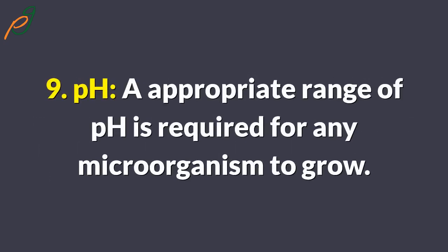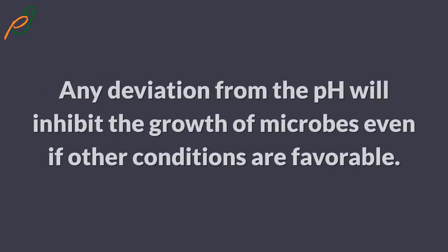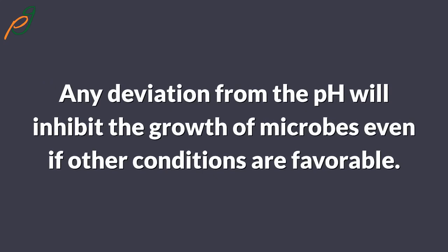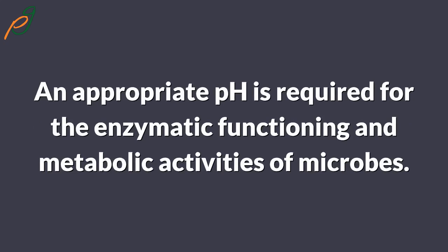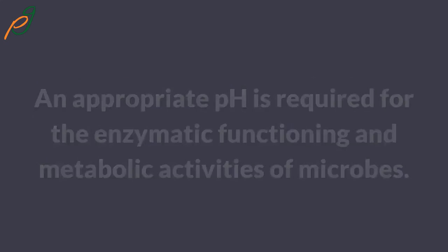Tip 9 — pH: An appropriate range of pH is required for any microorganism to grow. Any deviation from the optimal pH will inhibit the growth of microbes, even if other conditions are favorable. An appropriate pH is required for enzymatic functioning and metabolic activities of microbes.